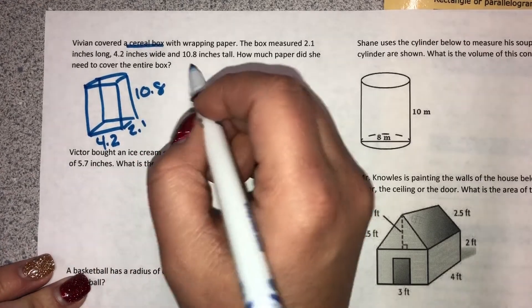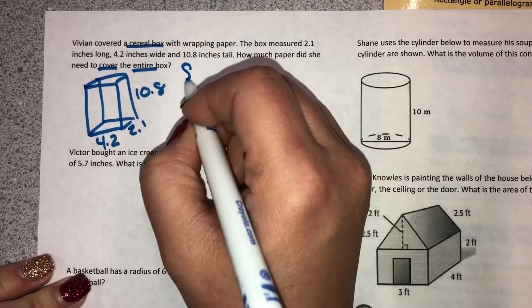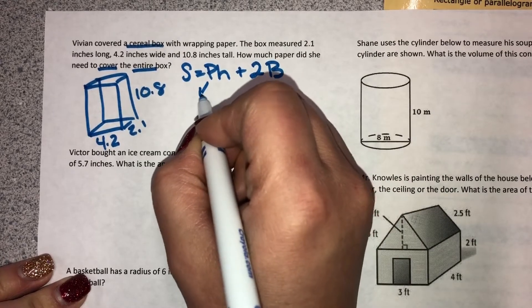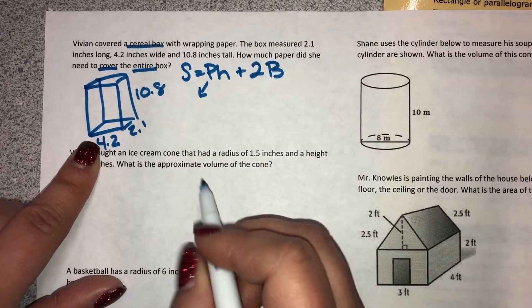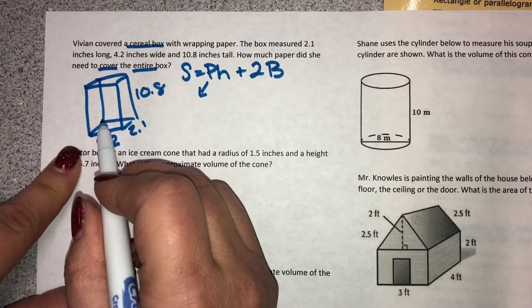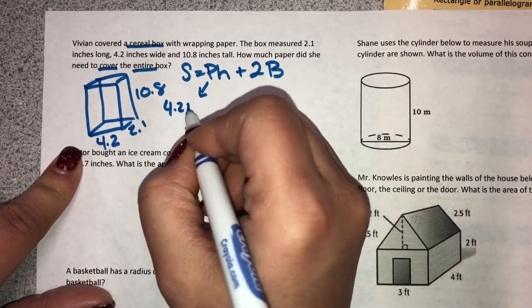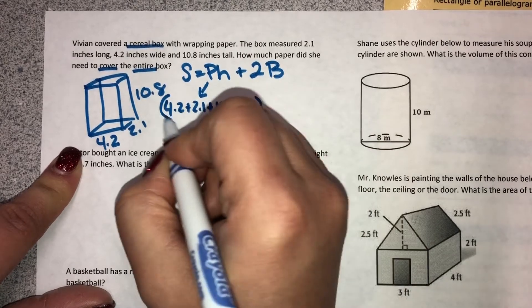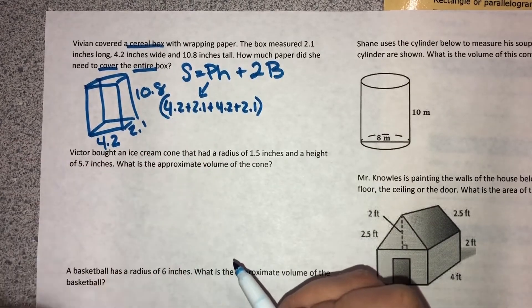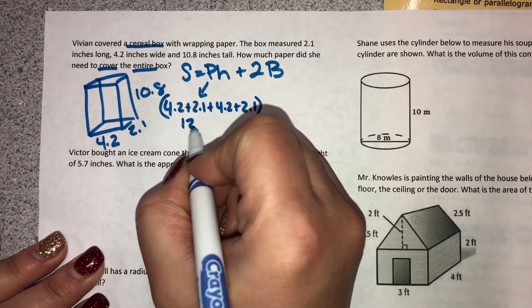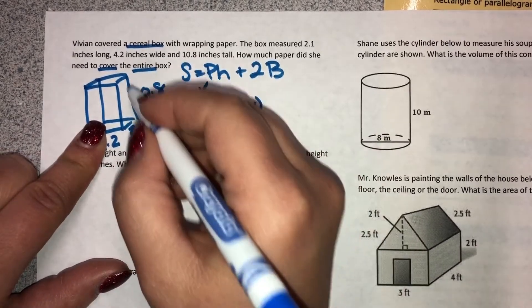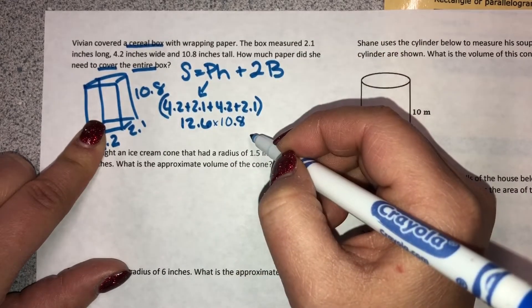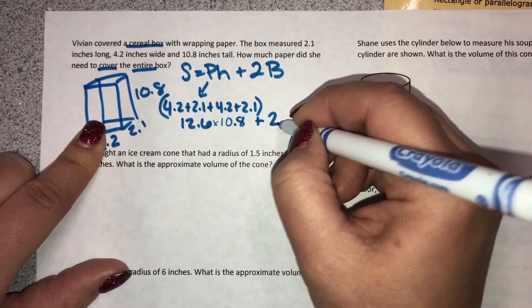I would start with my formula. Since it says entire and she's covering, that's total surface area. So S equals PH plus 2B. To find the perimeter of the base, we would add all four of the base sides. So 4.2 plus 2.1 plus 4.2 plus 2.1. That's all just to find the capital P part. When I do that, I see that that equals 12.6. The height of the shape is 10.8, so 12.6 times 10.8. That's the PH part.